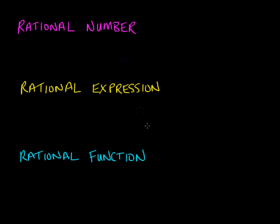In this video we're going to focus on how to simplify rational expressions and rational functions, but let's take a moment to go through the definitions of these three terms. A rational number is essentially just two numbers written together as a ratio or in fraction form. For example, five over three is a rational number, one half is a rational number — anything that can be written as a fraction with a numerator and a denominator.